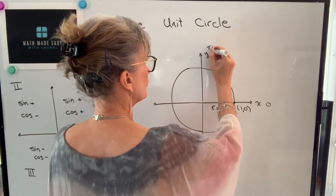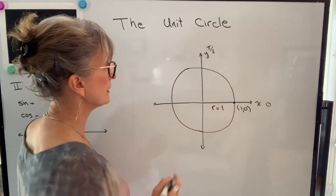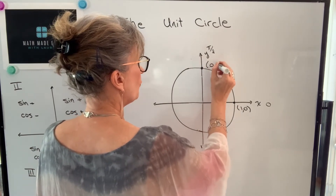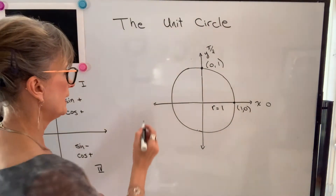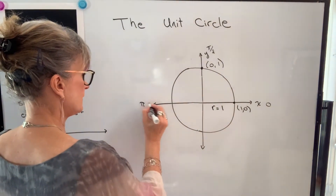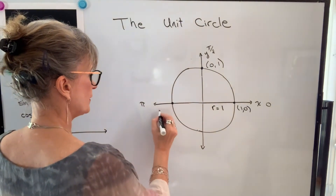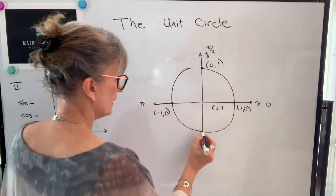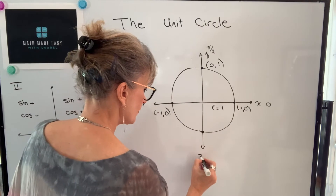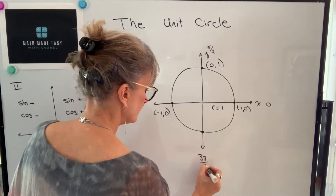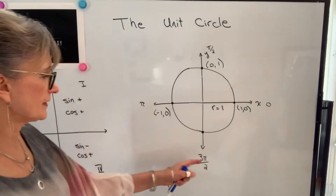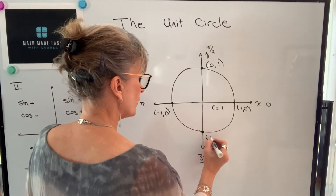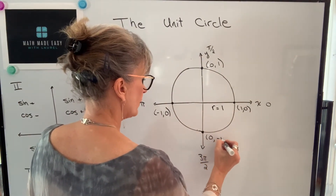This is 90 degrees, which is pi over two radians, and here the x value is zero and the y value is one. And at 270 degrees, which is three pi over two radians, my x coordinate is zero and my y coordinate is negative one.